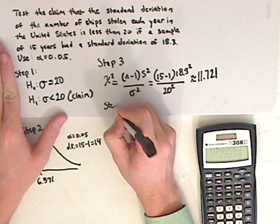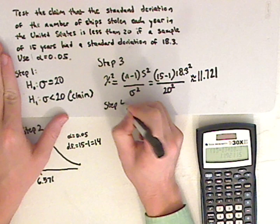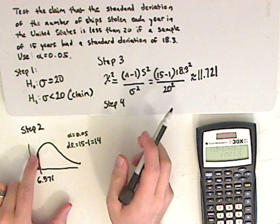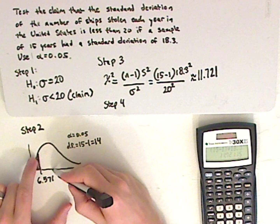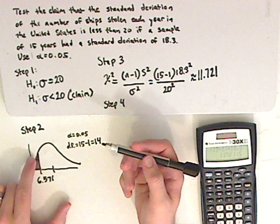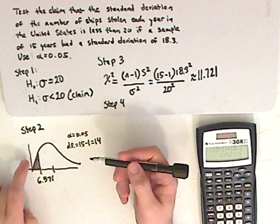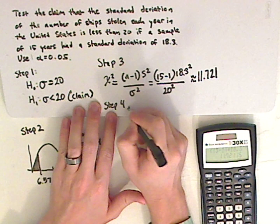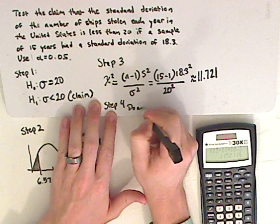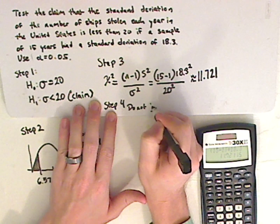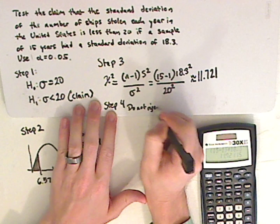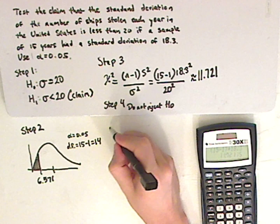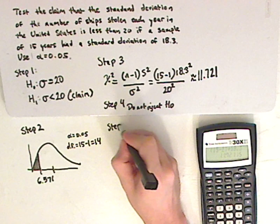Step number four is to make my decision. 11.721 falls somewhere over here. Well, if it falls somewhere over there, then I'm not going to reject it. So do not reject the null hypothesis.